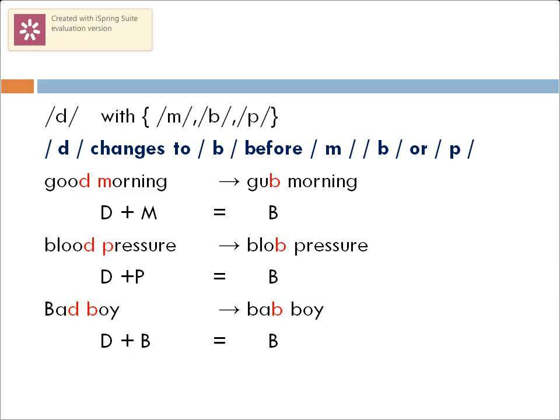Similarly, the sound /d/ also assimilates when used in combination with the sounds /m/, /b/, or /p/ — it changes to /b/. So 'good morning' actually sounds like 'goob morning,' 'blood pressure' sounds like 'bloop pressure,' and 'bad boy' comes out as 'bab boy,' with /d/ changing to /b/.